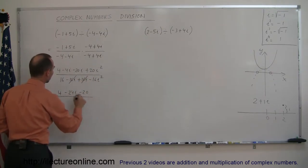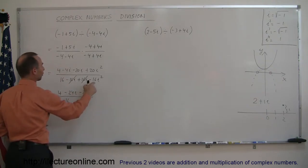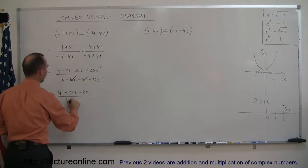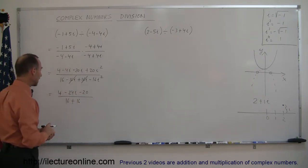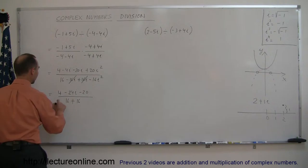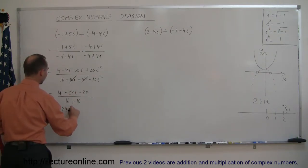In the denominator we have 16, and since i squared becomes negative 1, that becomes plus 16. Now in the numerator, all we have to do is add the real parts together: 4 minus 20 is minus 16, and we have minus 24i. So the numerator is minus 16 minus 24i.